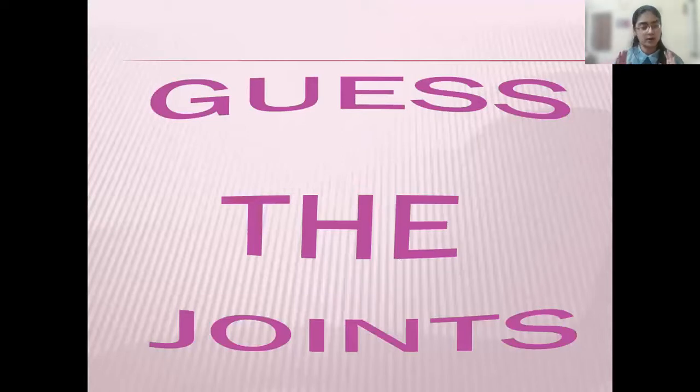Now, we all know that there are four types of joints. What are they? Ball and socket joint. Pivotal joint. Hinge joint. And fixed joint. Now, we will play a small game. Okay? Guess the joint. Who is ready? Excited? Come. Let's play.